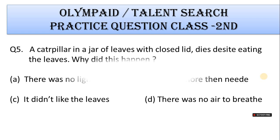Question 5: A caterpillar in a jar of leaves with a closed lid dies beside eating the leaves. Why did this happen? A. There is no light, B. It ate more than it needs, C. It didn't like the leaves, D. There was no air to breathe.